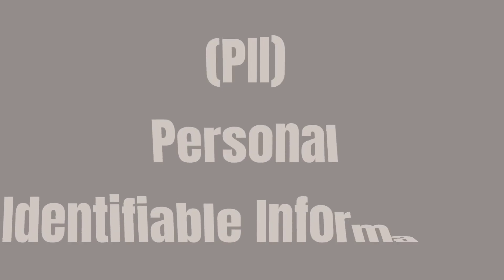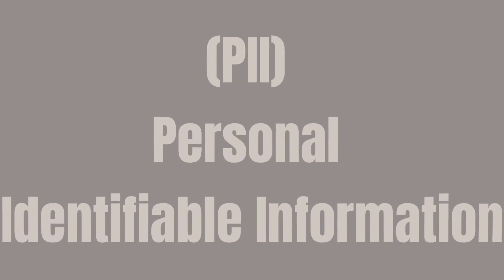PII, Personal Identifiable Information, is any data that can be used to clearly identify an individual. Some examples that have been traditionally considered personally identifiable information include things like national insurance numbers, your mailing address, your email, or your phone numbers.